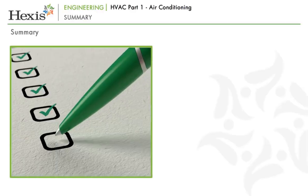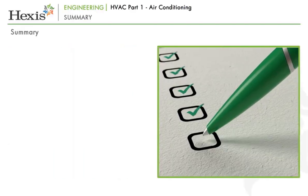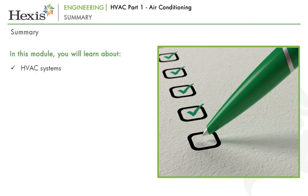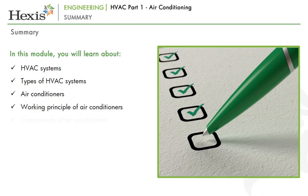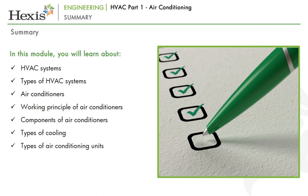That brings us to the end of Part 1 of this module on HVAC. In this module, we looked at HVAC systems and their types, learnt about air conditioners, their working principle and components, and got to know about the types of cooling and the different types of air conditioning units.